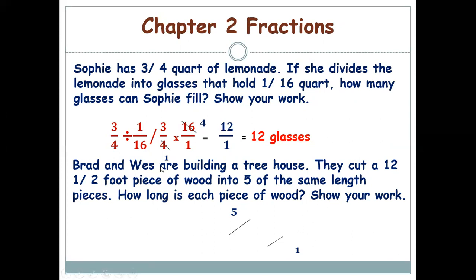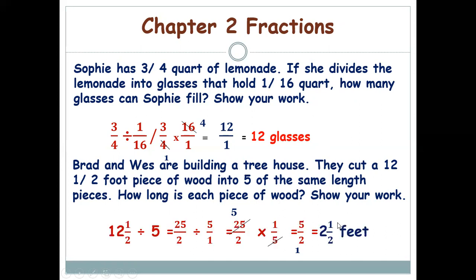Brad and Wes cut a 12½ foot piece of wood into 5 equal pieces — how long is each piece? This is a division problem: 12½ ÷ 5. Convert the mixed number to an improper fraction: 12 × 2 + 1 = 25/2. Then 25/2 ÷ 5/1 — keep the first, multiply by the reciprocal: 25/2 × 1/5. Simplify: 25 ÷ 5 = 5, so the answer is 5/2 = 2½ feet.